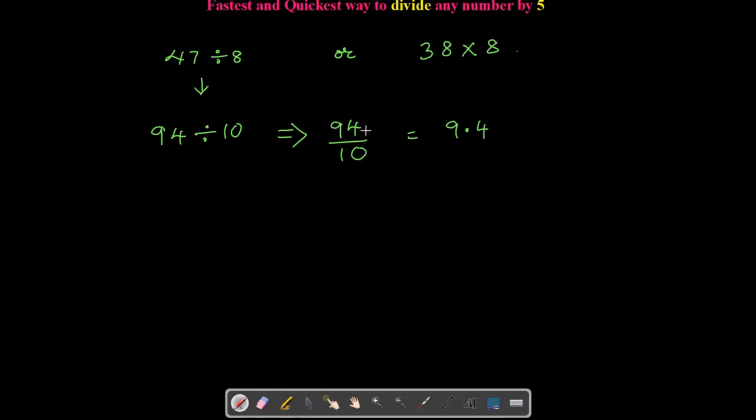What we do is we just shift the decimal point towards the left to the number of zeros we have in the denominator in the multiple of 10. So here, since we have one zero, we have shifted the decimal point towards the left. So isn't it easy?